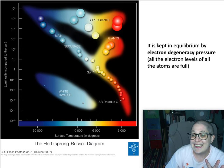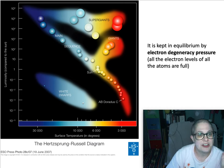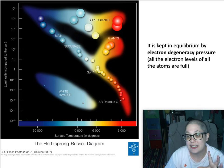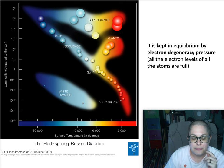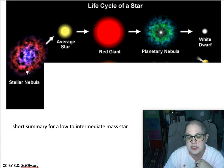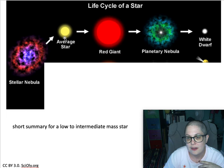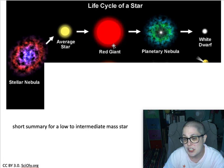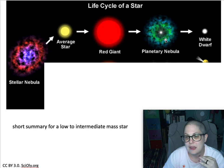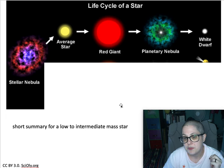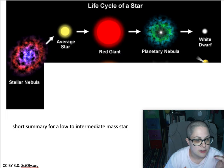That is the path of life for a sun-like star. Here's the path: it starts as a nebula, a star-forming region becomes a star, it goes through — this is simplified, it only shows one red giant stage but it kind of went through two — and then goes to a planetary nebula and a white dwarf. That's a really short summary for a low or intermediate mass star.